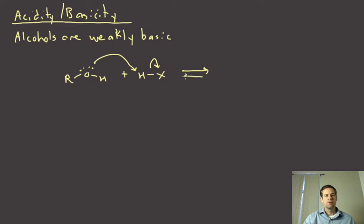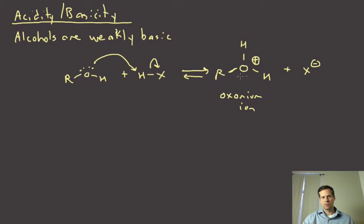This is an equilibrium process, of course. And so the product of that protonation is going to be an oxygen - obviously it's positively charged because it's picked up a positive proton - and there's our counter ion. Whenever you have oxygen that's positively charged, this is an example of an oxonium ion.